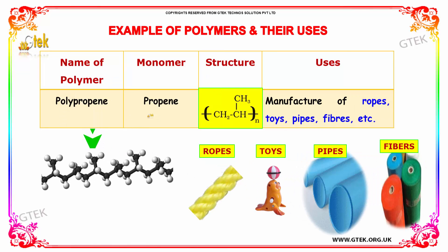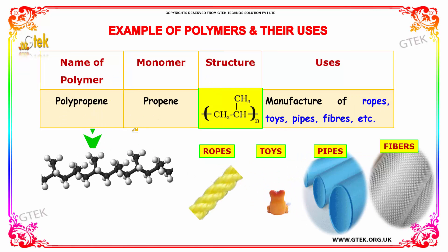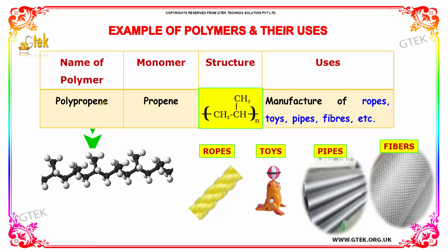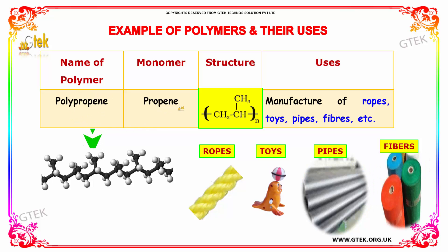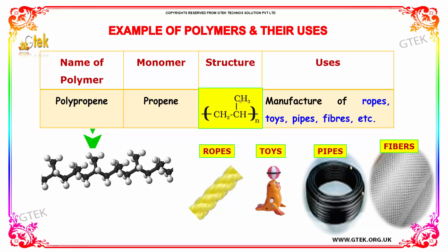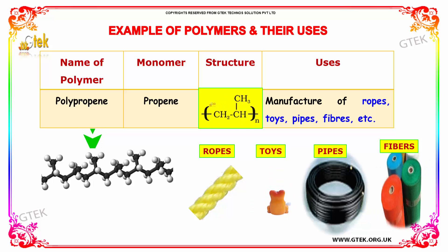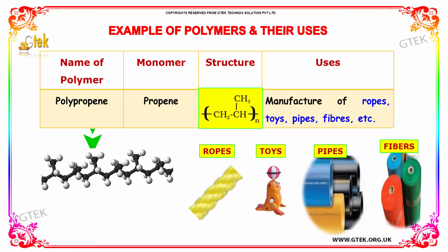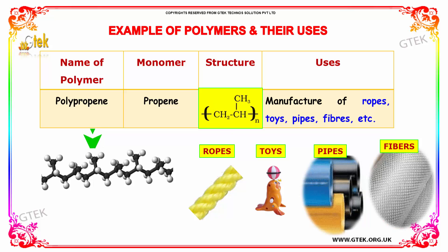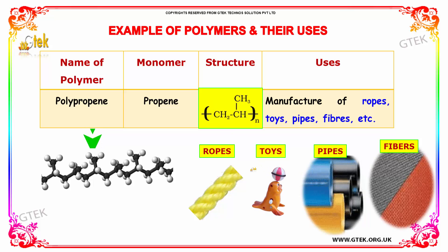Examples of polymers and their uses. An important polymer, polypropene, has a monomer propene, whose structure can be seen here, of n units. They are generally used for the manufacture of toys, pipes, ropes, and fibers.